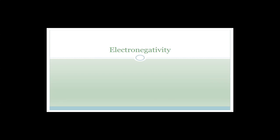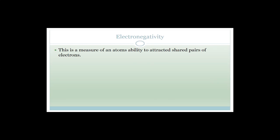So let's talk about what electronegativity is. It's a measure of an atom's ability to attract shared pairs of electrons — shared pairs of electrons. That is the formal definition of electronegativity, and yes, Grade 11, you have to learn it. You have to learn that this is a measure of an atom's ability to attract shared pairs of electrons.